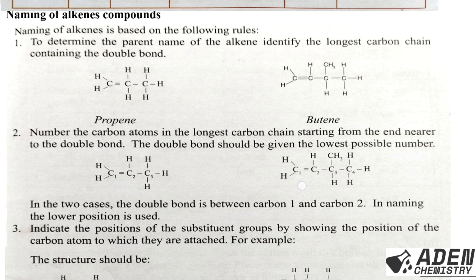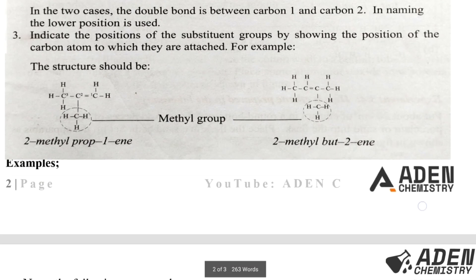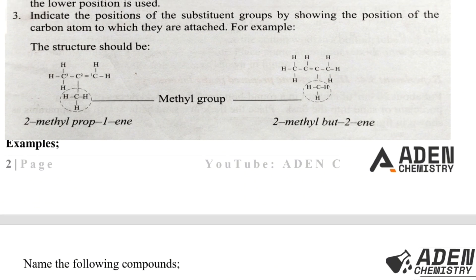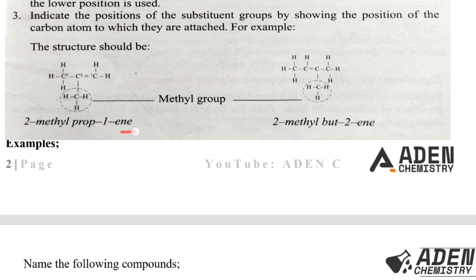When counting from both sides, use the side that gives the double bond the lower number. The lower position number is always used in the name. Rule 3: Indicate the positions of substituent groups by showing the position of the carbon atom to which they are attached. For example, if a methyl group is attached to carbon number 2 and the double bond is at carbon number 1, you write '2-methyl' before the parent name.